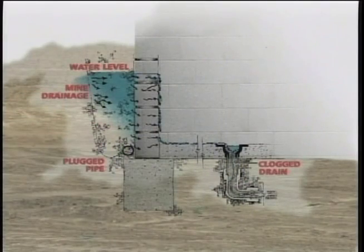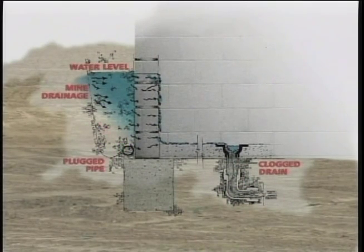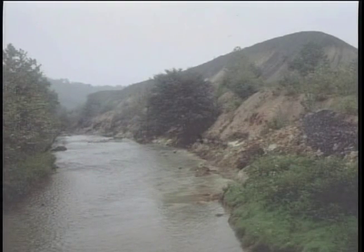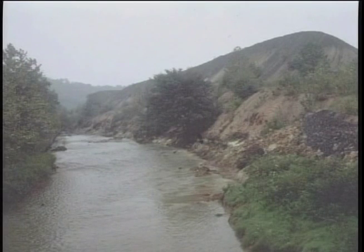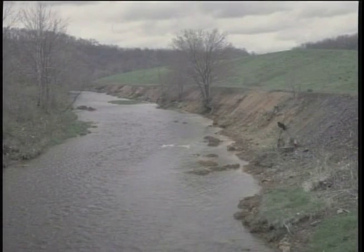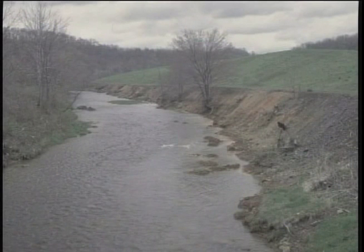Footer drains clog and stop operating. If devoid of vegetation, mine spoil piles are easily eroded, causing significant amounts of sediment and polluted water to drain into streams.